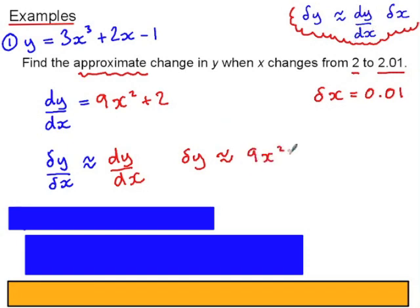and say that the small change in y is going to be approximately equal to dy by dx, which is 9x squared plus 2, multiplied by the small change in x, which is 0.01.